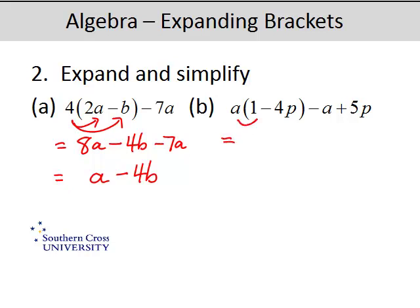This one we need to expand these brackets out and then see if there's any like terms with these other terms here. Now this is a 1, so 1 times a is just a. Take away a times 4p is 4ap. Take away a plus 5p. So here we've got a take away a, so basically it just disappears.